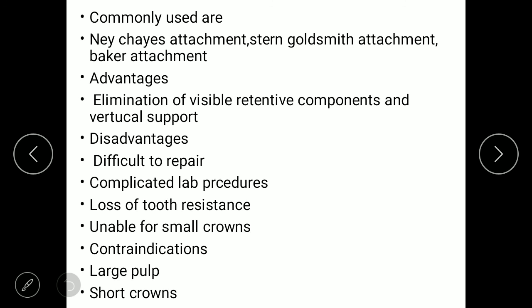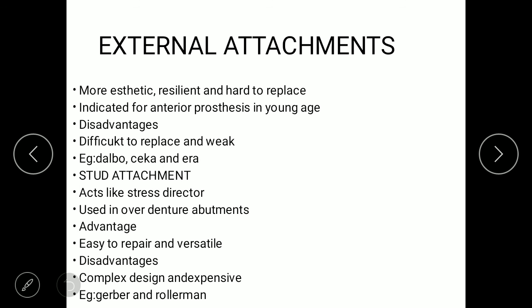Disadvantages of internal attachment include difficulty in repair, complicated lab procedures, loss of tooth structure due to wear, and inability for use in small crowns due to size. Contraindications include large pulps and short crowns. The external attachment is more aesthetic, resilient, and indicated for anterior teeth. Disadvantages include difficulty to replace. Examples include Dalbo, Secar, and ERA attachments. The stud attachment acts as a stress director, used in overdenture abutment cases. Advantages: easy to repair and versatile. Examples: Gerber and Rollerman.